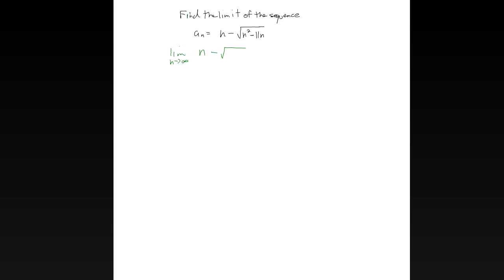Find the limit of the sequence a sub n equals n minus the root of n squared minus 11n. The limit as n goes to infinity — this is one of the stranger types where we have essentially something that looks like infinity minus infinity. It is an indeterminate difference.